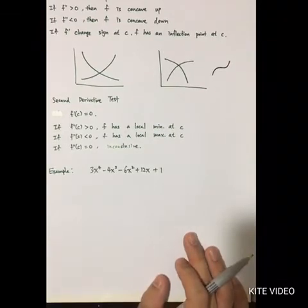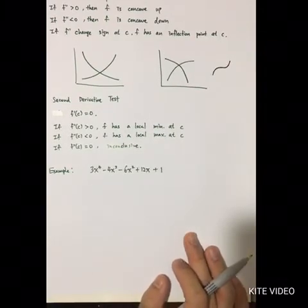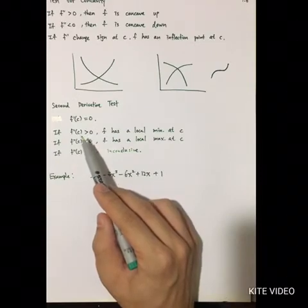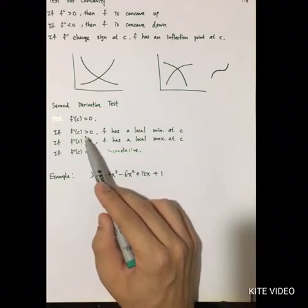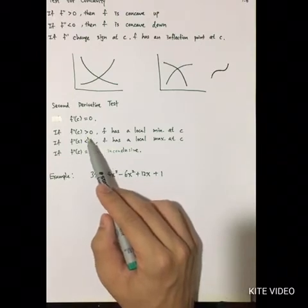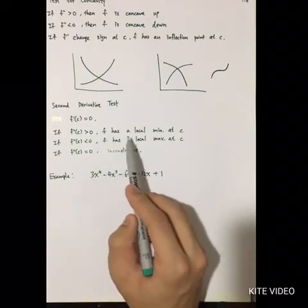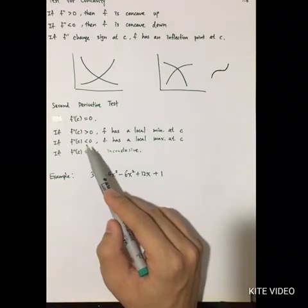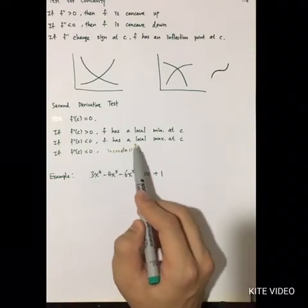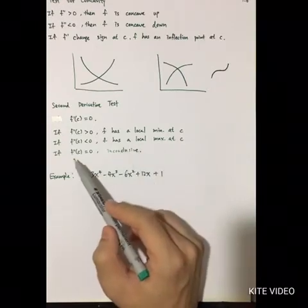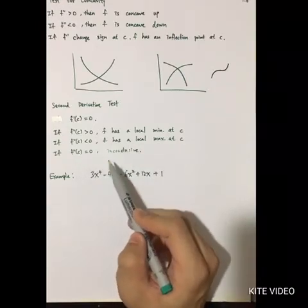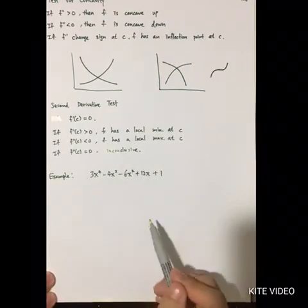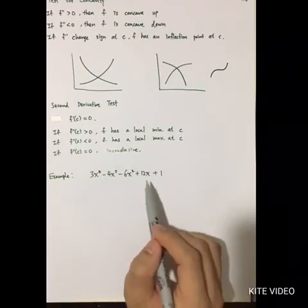To determine whether a point is a maximum or minimum using second order conditions: first locate the critical point, then evaluate f double prime there. If it is positive, the function has a local minimum at that point. If negative, f has a local maximum at point c. If the second order condition equals zero, we cannot conclude anything — it may be a local maximum, local minimum, or neither.